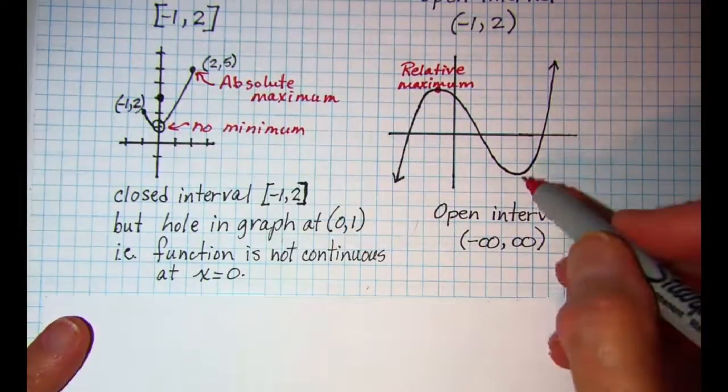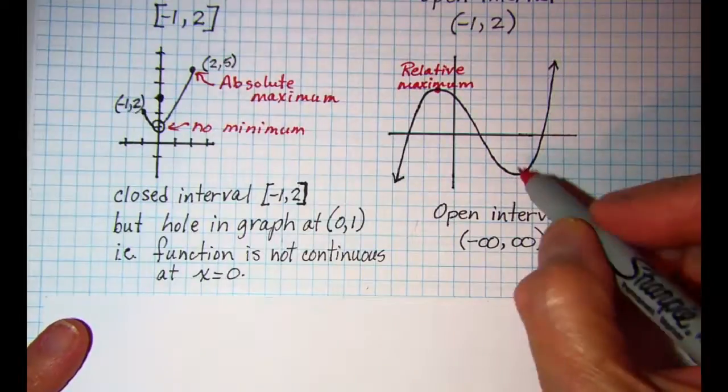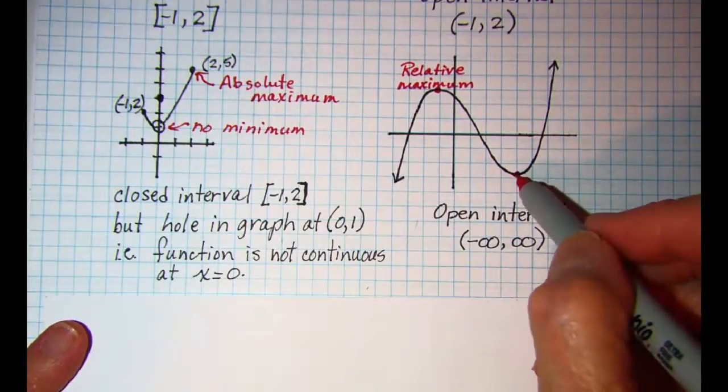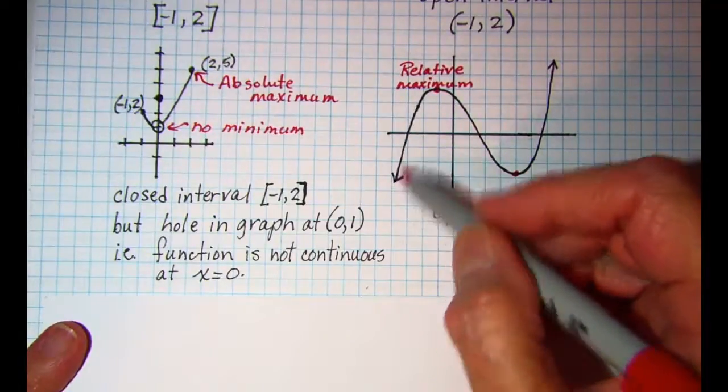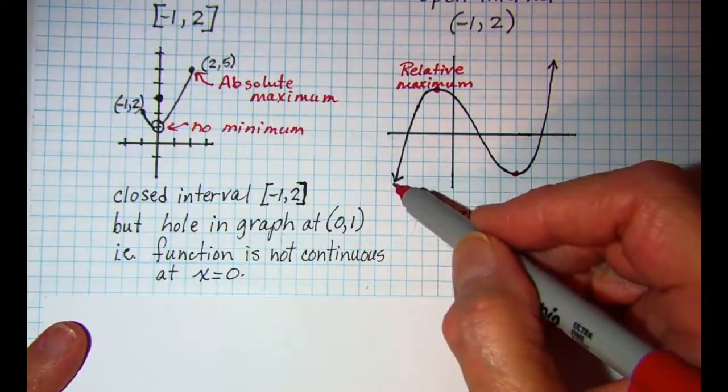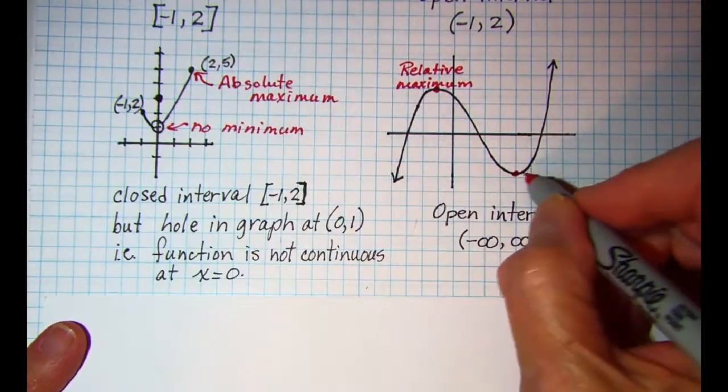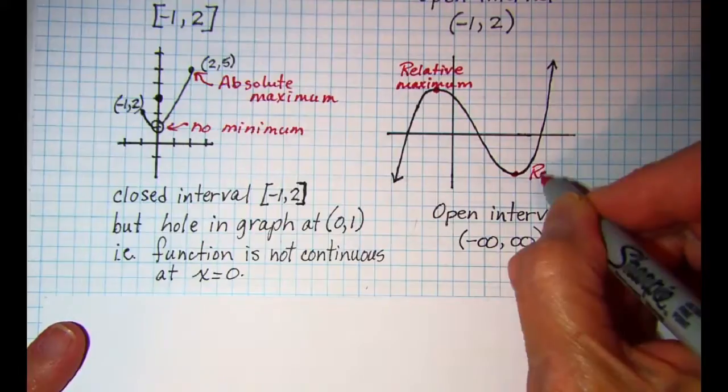And then we can talk about a min here. Let's say it's right about there. But again there are points that are lower on the graph that have a smaller y value. So we would call this a relative min.